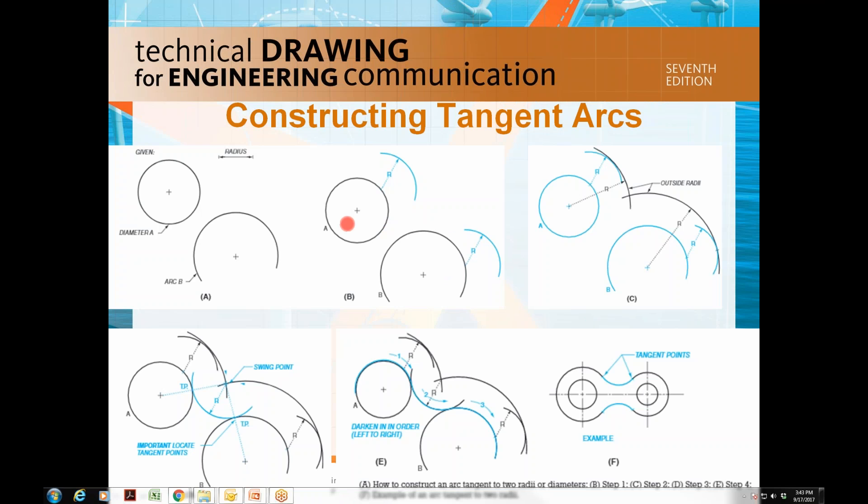Video number 5 shows that given the diameter A and arc B with center point located, the required radius. Set the compass at the required radius and out of the way swing a radius of the required length from a point on the circumference of the given diameter A.